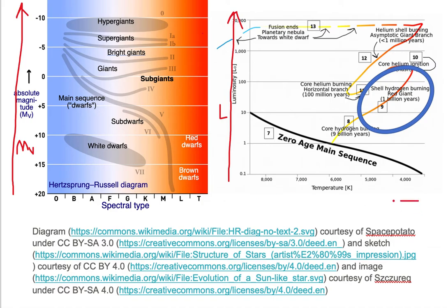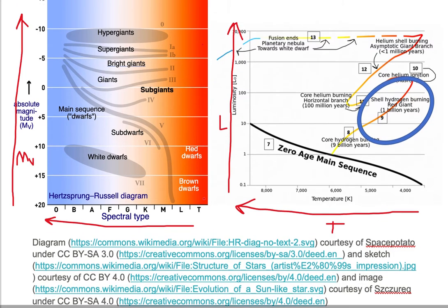On the horizontal axis we're looking at increasing temperature on the left, and on the left diagram instead of temperature we're looking at what's called spectral type, which is based on temperature. So the two properties temperature and spectral type are also equivalent. Luminosity is equivalent to absolute magnitude, temperature is equivalent to spectral type when it comes to properties.